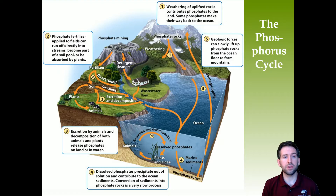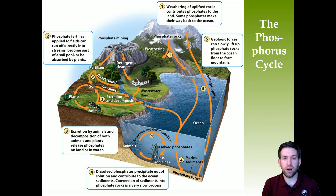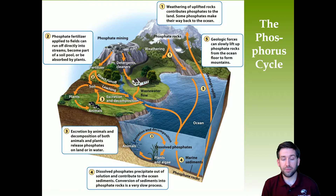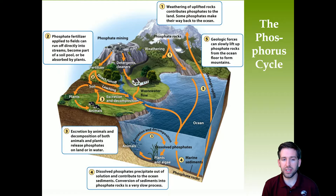Step two: phosphate fertilizer applied to fields can run off directly into streams, become part of a soil pool, or be absorbed by plants. We mine phosphate-containing rocks for agricultural purposes — most gets into plants, but it also eventually finds its way to a body of water. Step three: excretion by animals and decomposition of both animals and plants release phosphates on land or in water, where they are absorbed by other plants or eaten by animals.